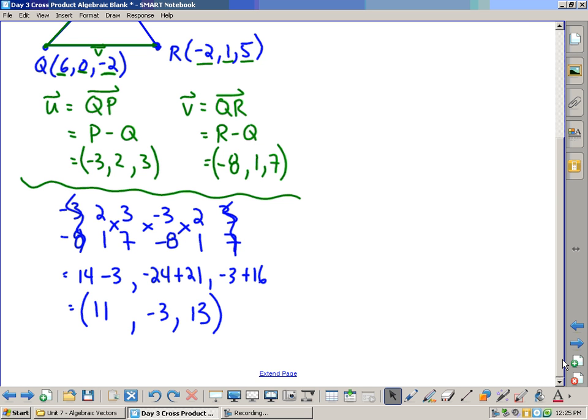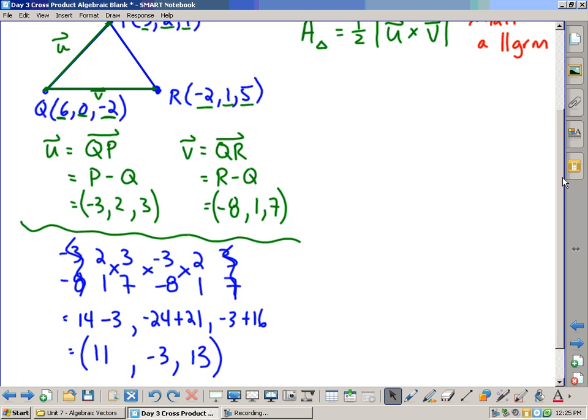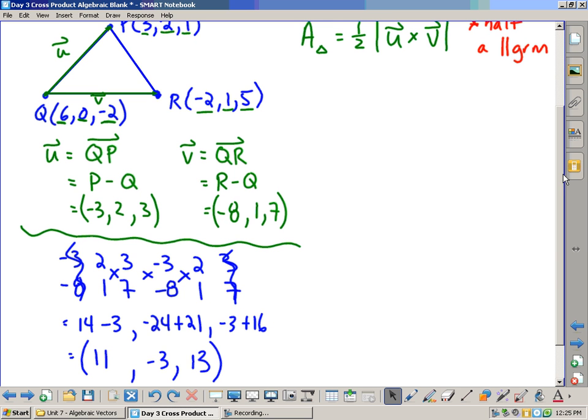So now let's go and actually answer this question. So we need to find the area is one half this vector that we just found, which was 11, negative 3, 13. But remember, it's not just that vector, it's how big that vector is. So we need the magnitude of the vector 11, negative 3, 13. So again, from the first day, we remember that the magnitude can be found by doing the square root of the squares, is what I call it.